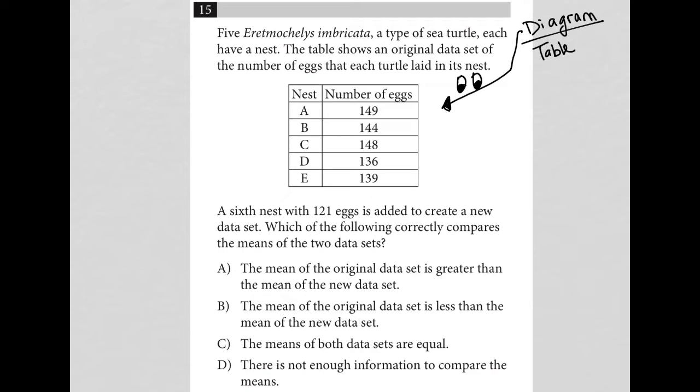So I can see here that the table is very simple. It's only two columns, like five rows. We have nests A through E and the number of eggs in each nest. Nothing very complex there at all. So I'm going to start reading.